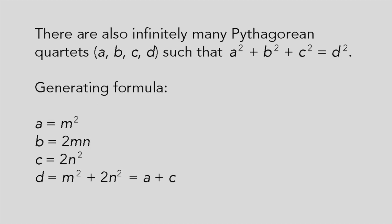There's also an infinite number of Pythagorean quartets A, B, C, D, such that A squared plus B squared plus C squared equals D squared.